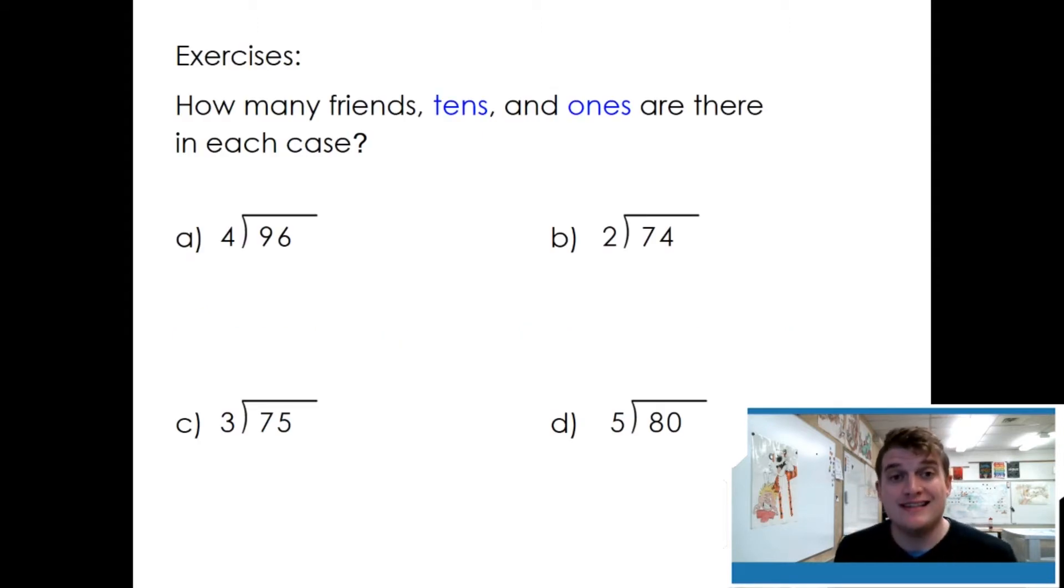How many friends, tens, and ones are there in each case? There are four friends, there are nine tens, and six ones. Try the next three.